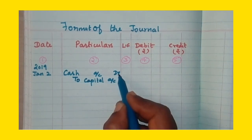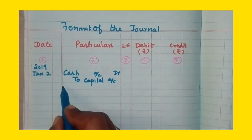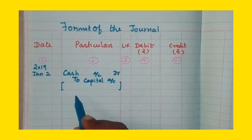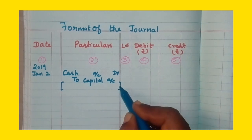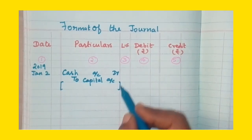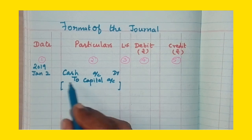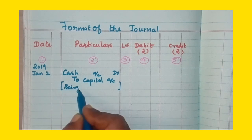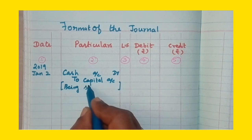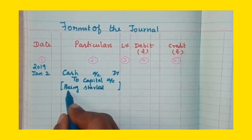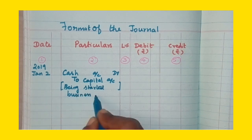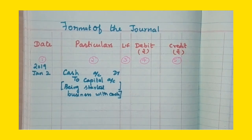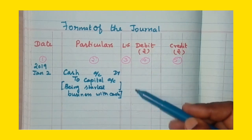After writing what is debited and what is credited, the next part of the particulars column is the narration. Narration is a description explaining the journal entry. For example, if the entry is for starting business with cash, we write: 'Being started business with cash.' This is called narration, and it is what we write in the particulars column.